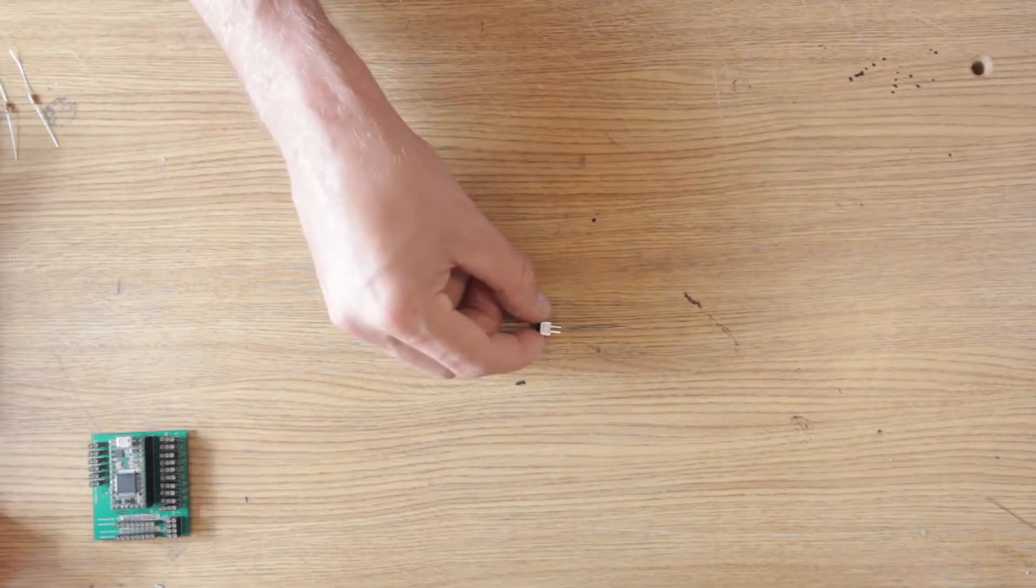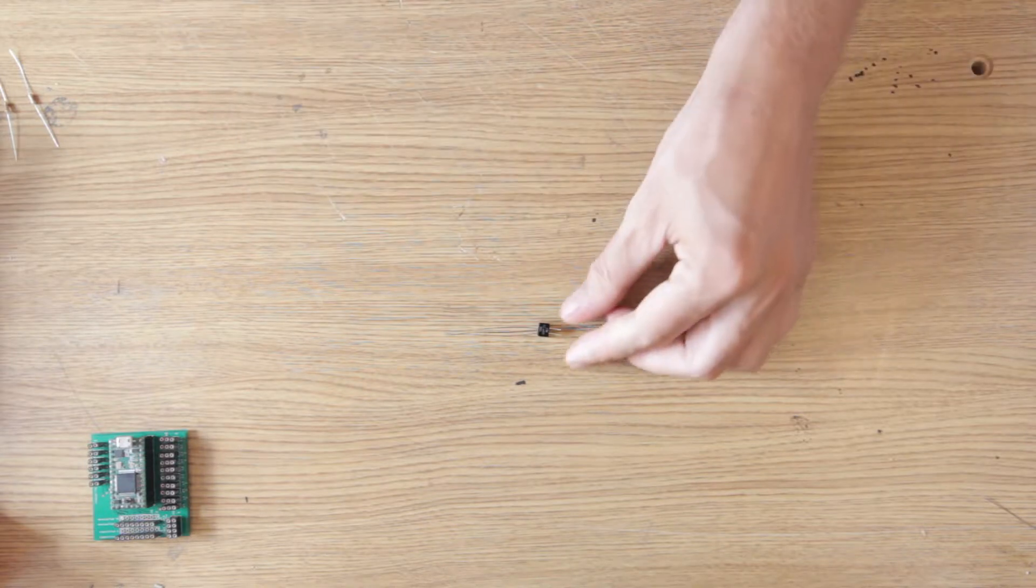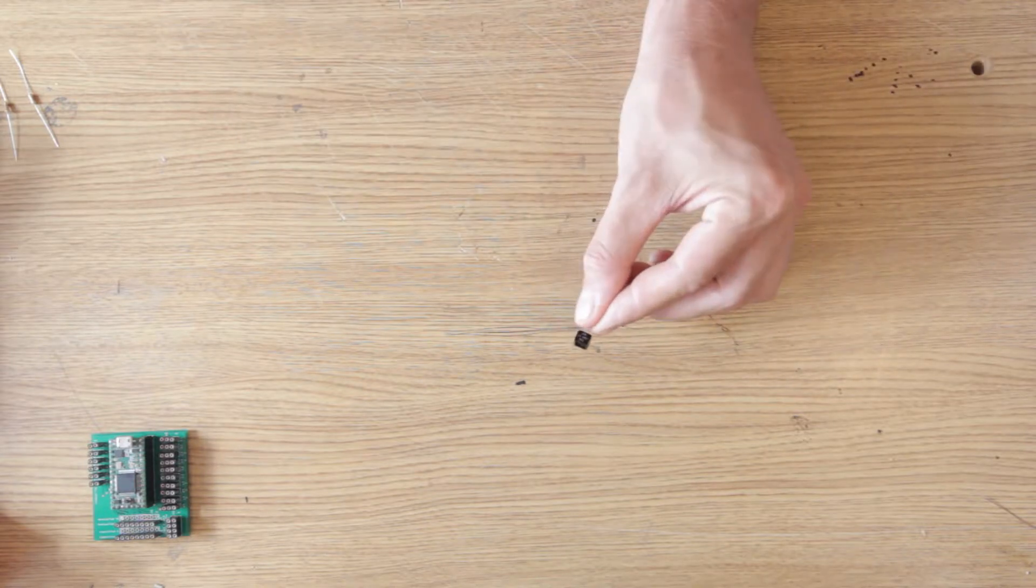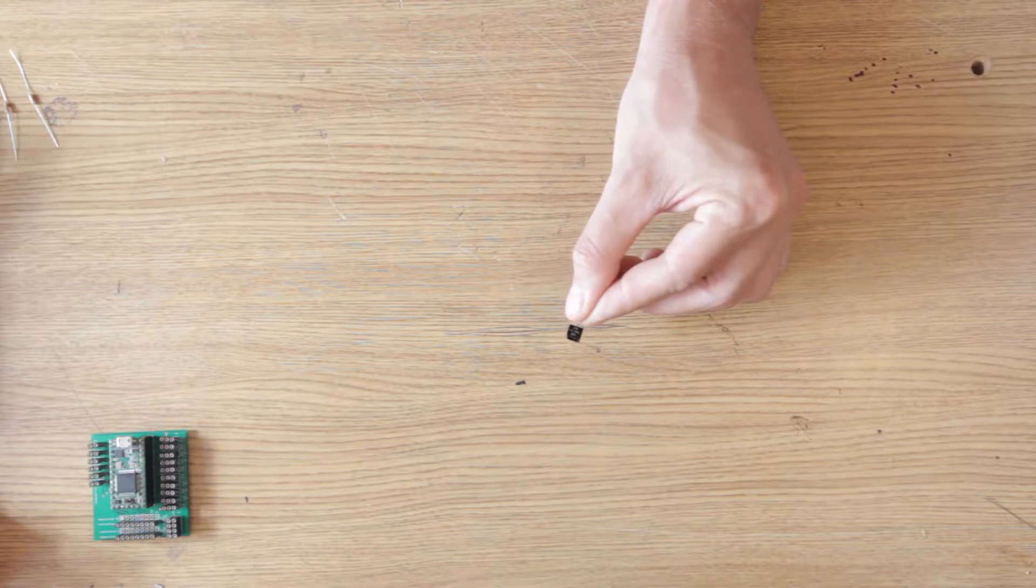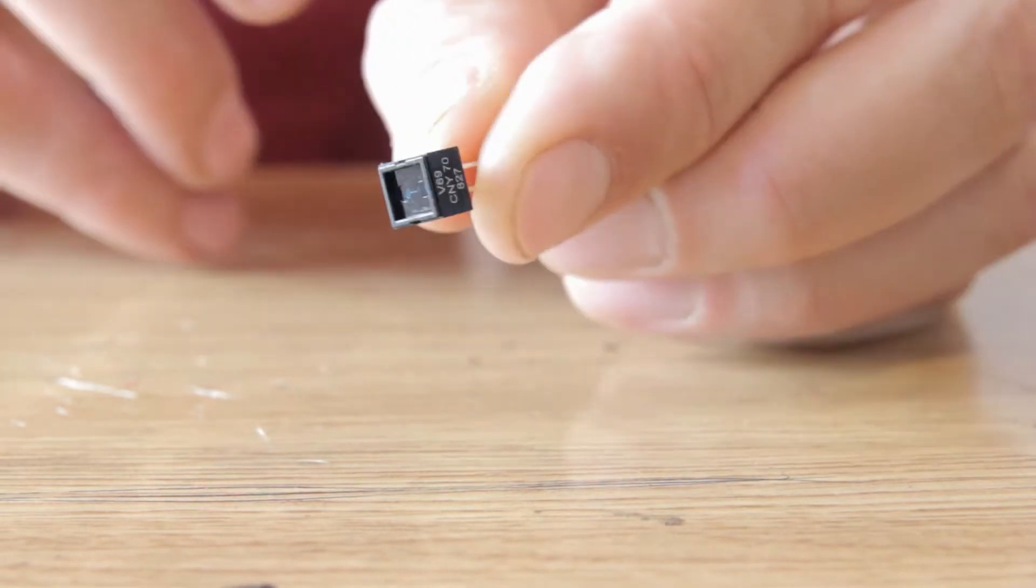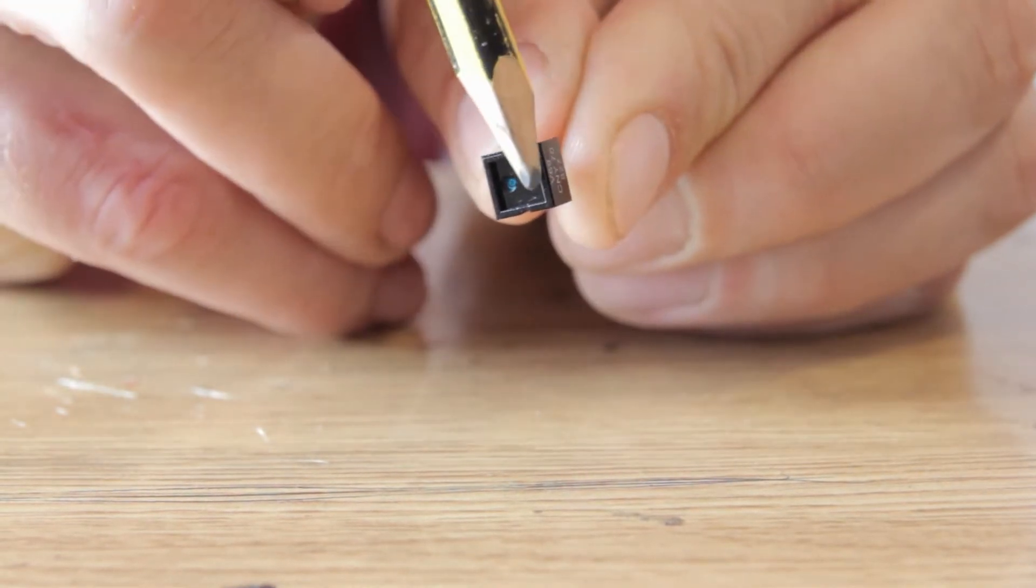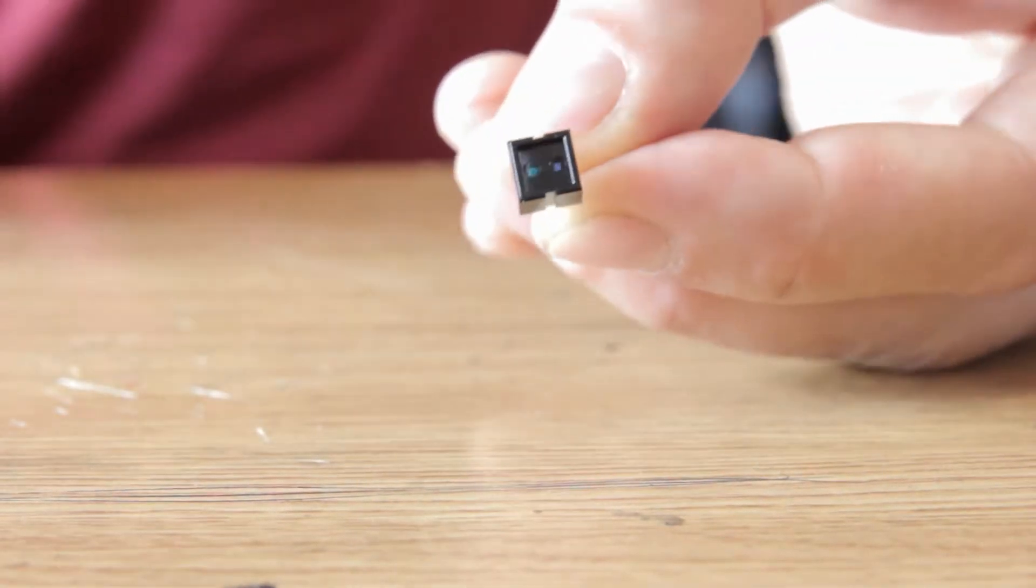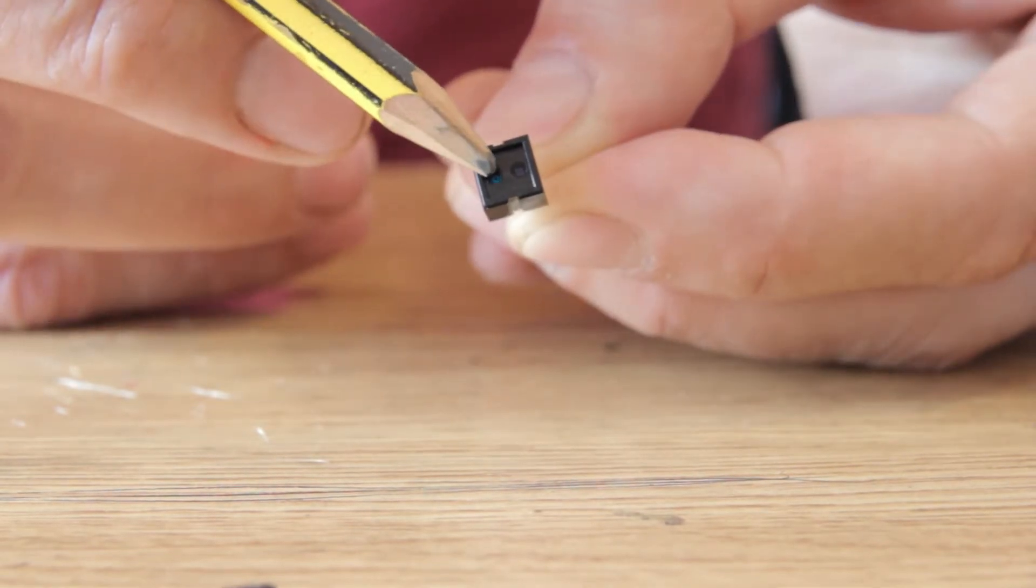The CNY70 is a 4-pin component which carries an LED and a photosensor in this small package. The text on the side is useful for knowing which side is which. The dark dot on the text side is the sensor, while the bluish dot is the LED.